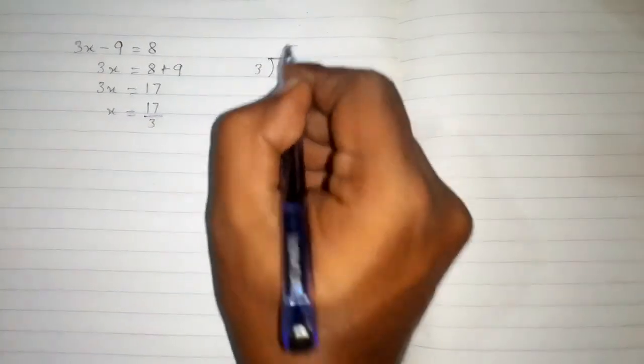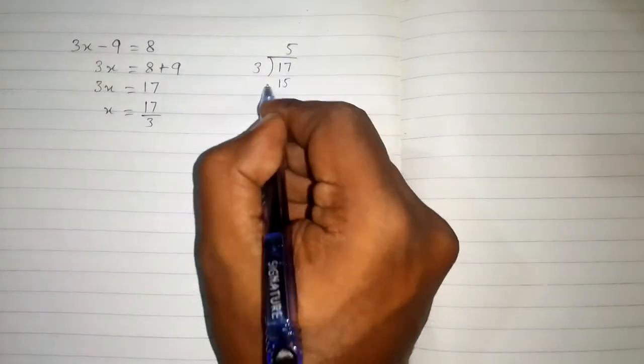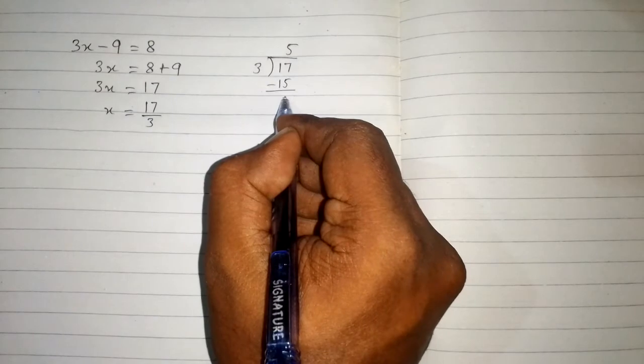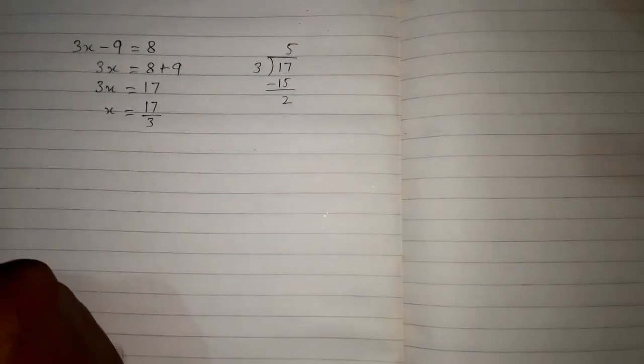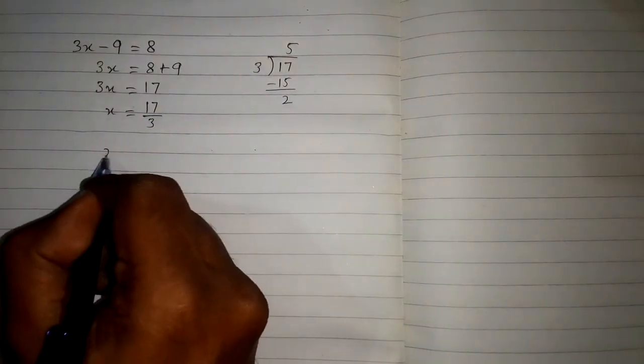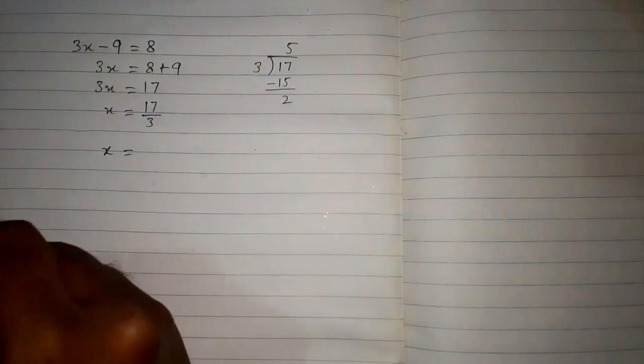3 times 5 is 15 and we have 2 as a remainder, so we can write x as